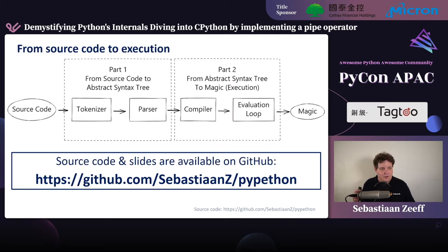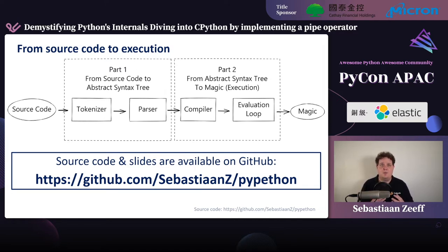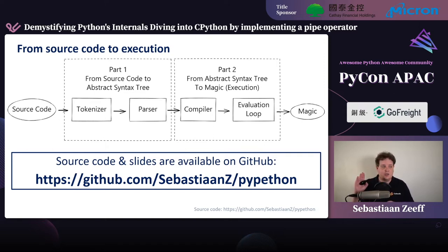So today, what are we going to do? First, we're going to start with source code. In part one, we're going to parse that source code and produce something that is a little bit easier for computers to work with — this is called an abstract syntax tree. The goal of part one is parsing the source code and ending up with something called an abstract syntax tree.